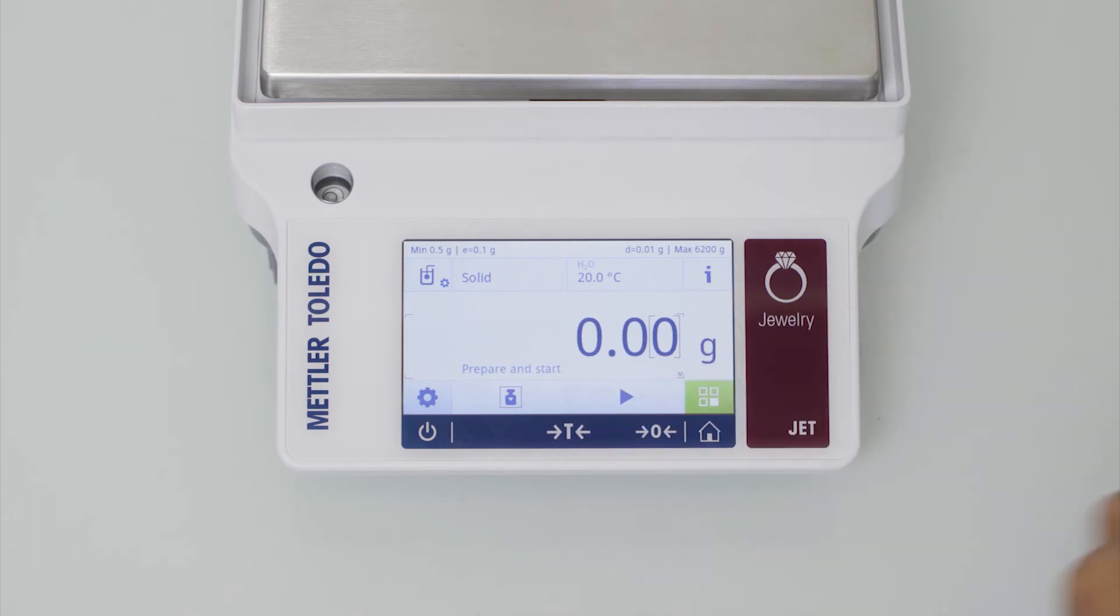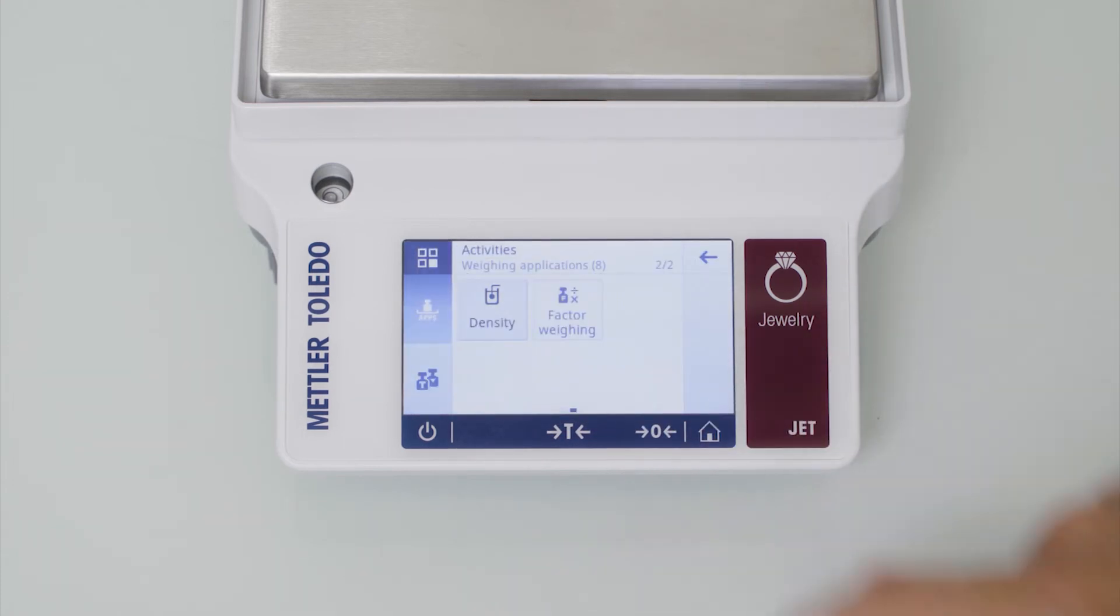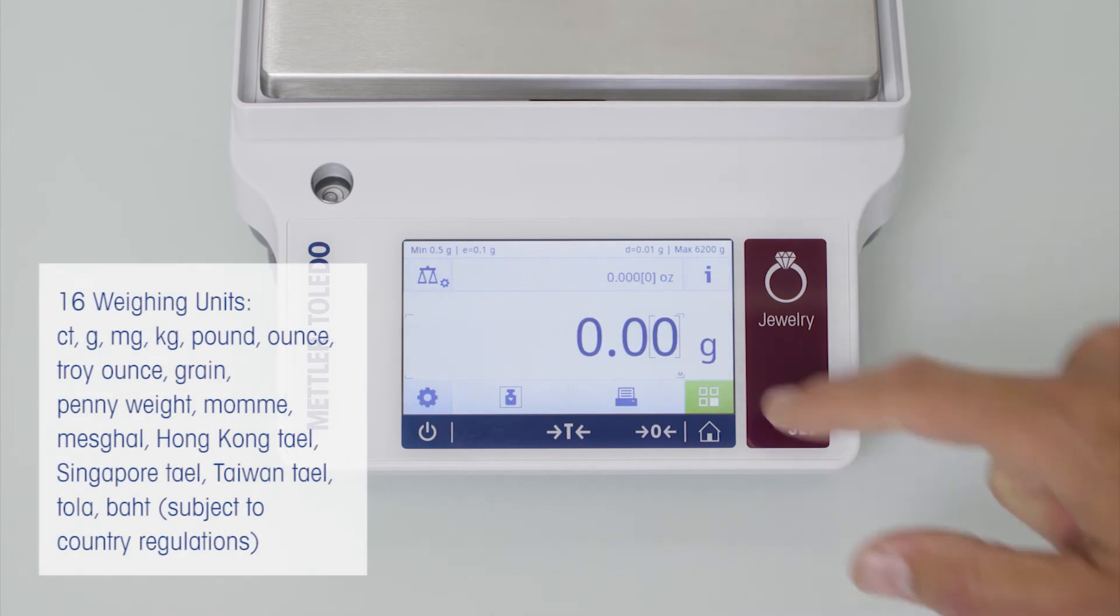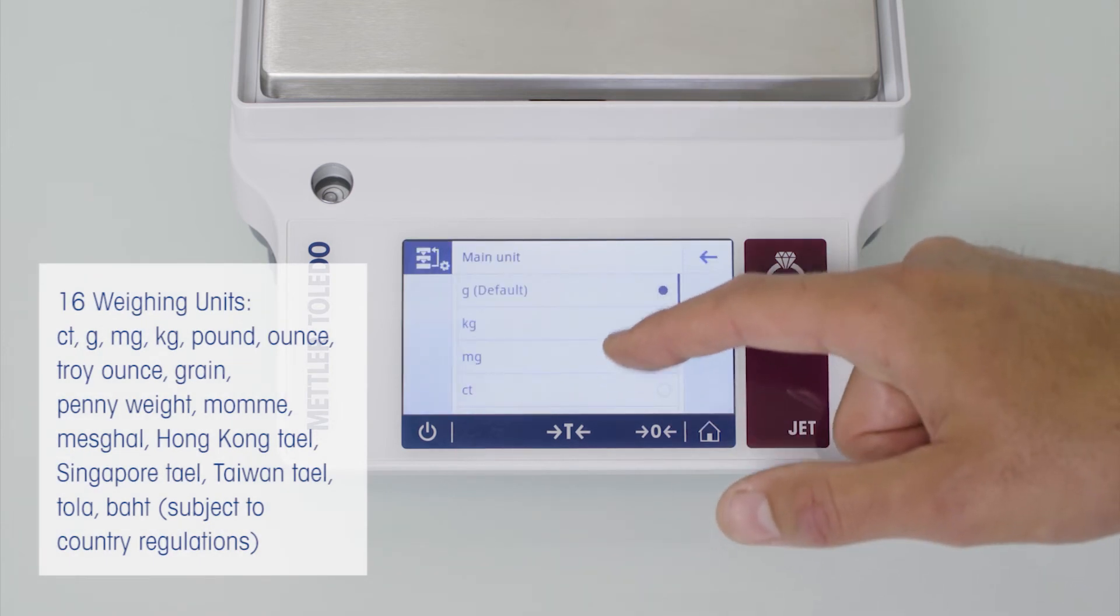16 different weighing units are available for weighing in your local weighing unit, such as Tola, Pennyweight and Baht. Even better, you can show two weighing units at the same time, displaying for instance your local weighing unit and the corresponding weight in grams.